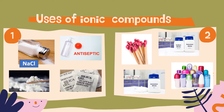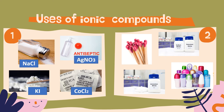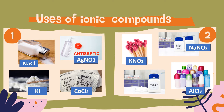Number one is NaCl, also known as table salt, used for food preservation and food preparation. Then we have CoCl₂ or cobalt(II) chloride, also known as silica gel, which absorbs water. Then we have KI or potassium iodide, an iodine supplement in iodized salt. We also have silver nitrate, used as an antiseptic and germicide. Moving on, NaNO₃ or sodium nitrate is used as a meat preservation additive. AlCl₃ is one of the ingredients in deodorants. KNO₃ or potassium nitrate is used in gunpowder, matches, and fireworks. And ammonium nitrate is used in fertilizers for plants.